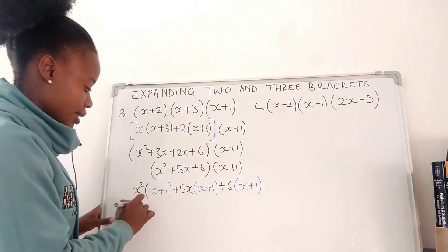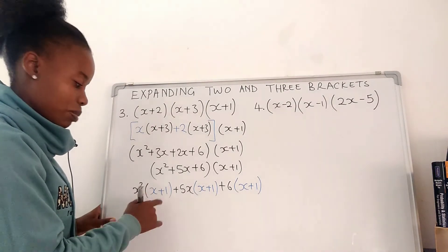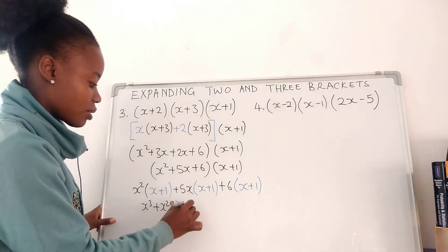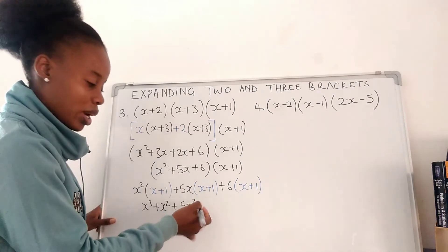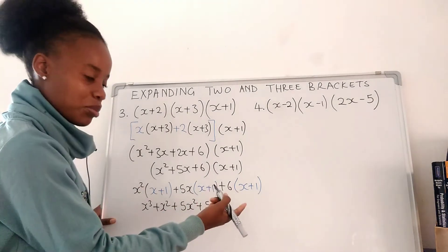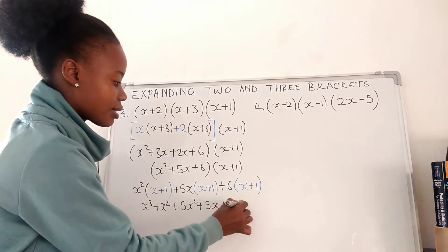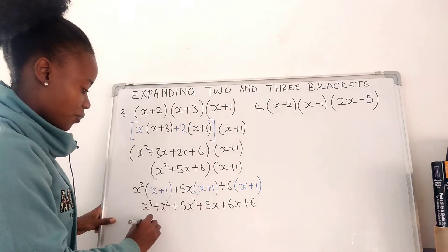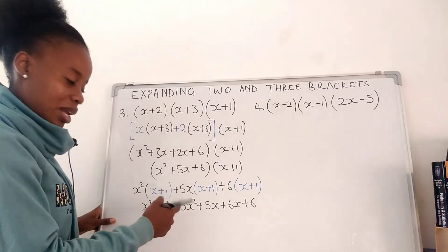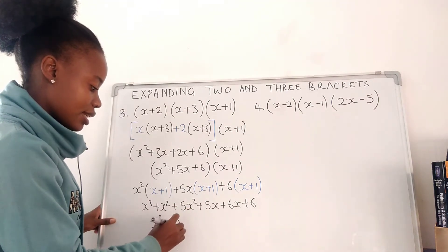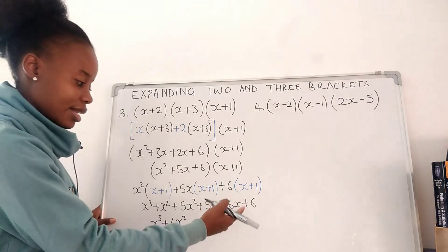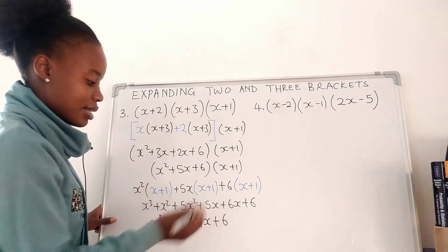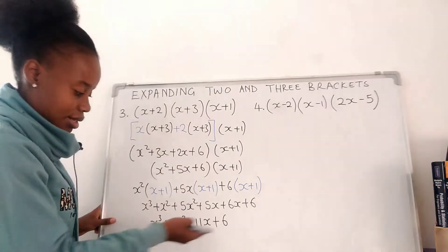Remove brackets: x squared times x is x to the power 3, x squared times 1 is x squared. Then 5x times x is 5x squared, 5x times 1 is 5x. Then 6 times x is 6x, 6 times 1 is 6. After this step we collect like terms: x to the power 3, x squared plus 5x squared is 6x squared, 5x plus 6x is 11x, then 6. This is how to remove three brackets.